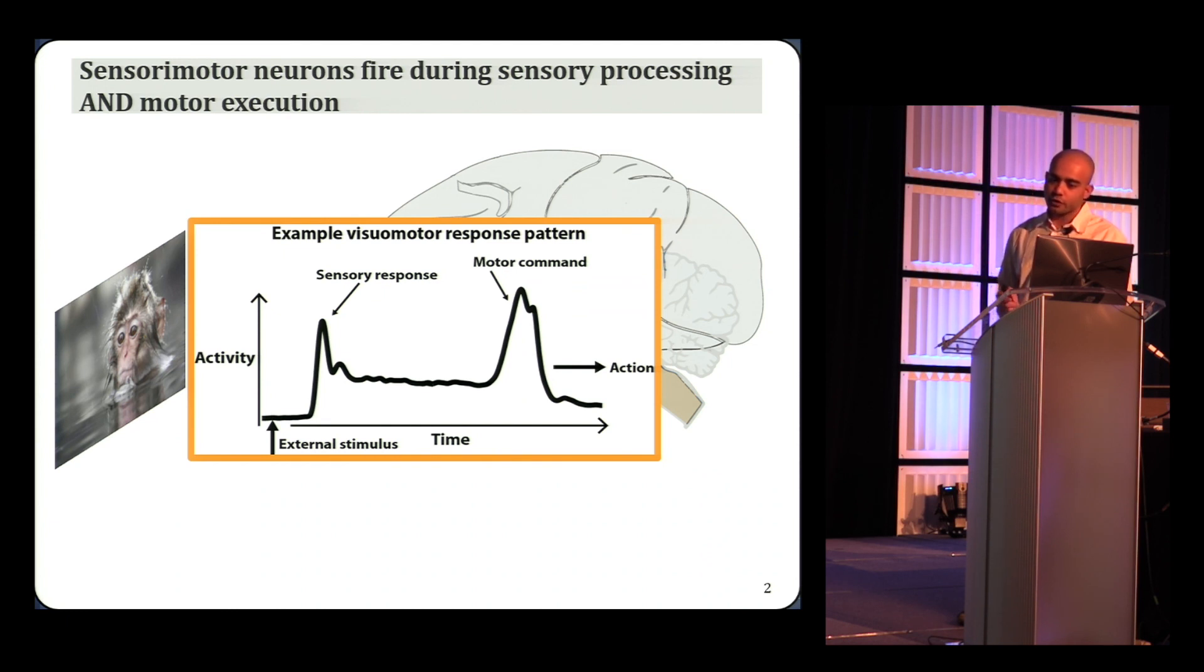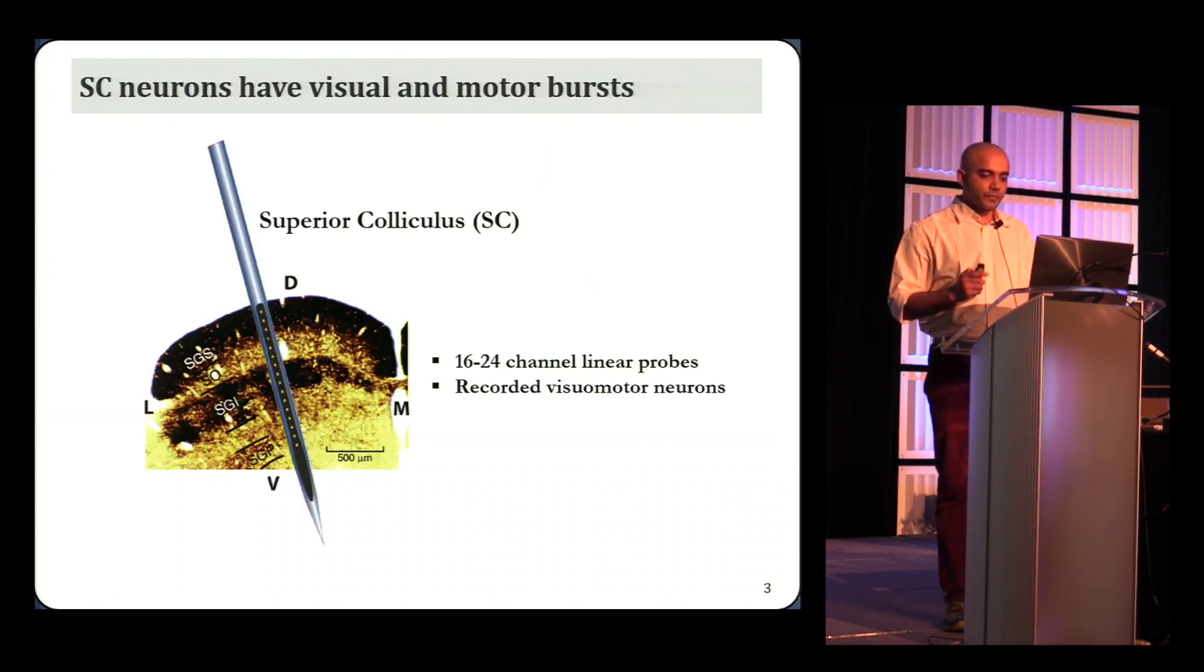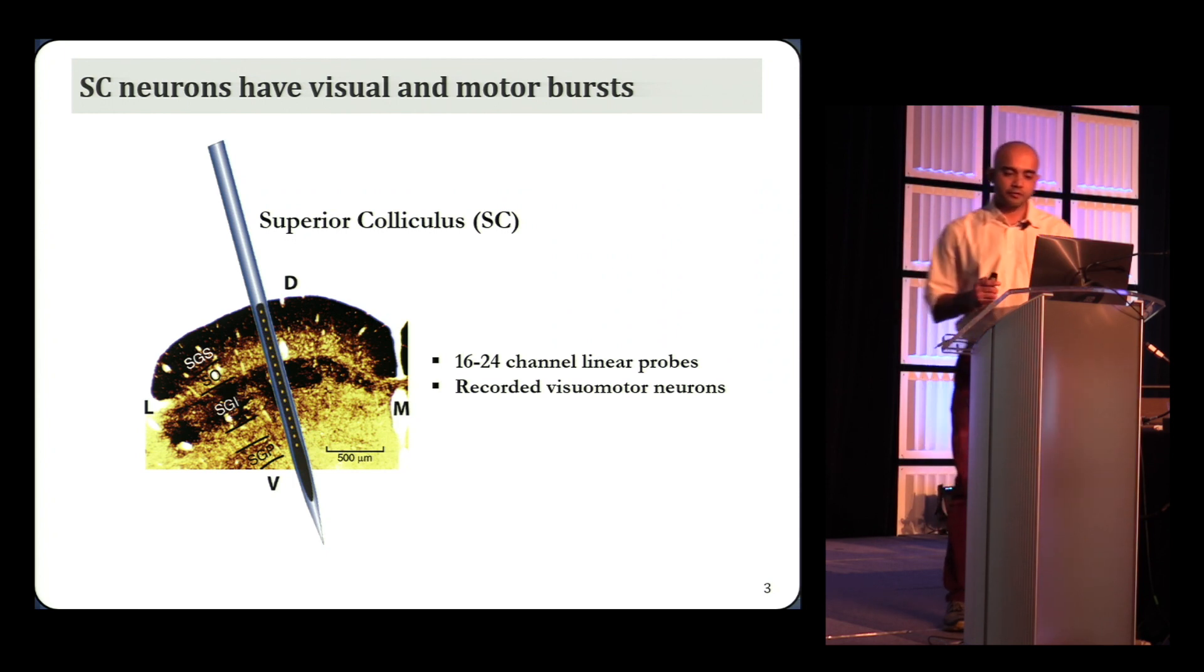So these neurons, here's an example visual motor neuron, fire distinct bursts in response to visual input and when generating an eye movement. So you see two distinct bursts. Why don't we get a movement earlier triggered off this first visual burst? To get a better handle on this problem, we used laminar probes to record activity from a population of neurons in the superior colliculus. We recorded from the intermediate layers, which have a majority of these visual motor neurons. This is a cross section of the brain region.